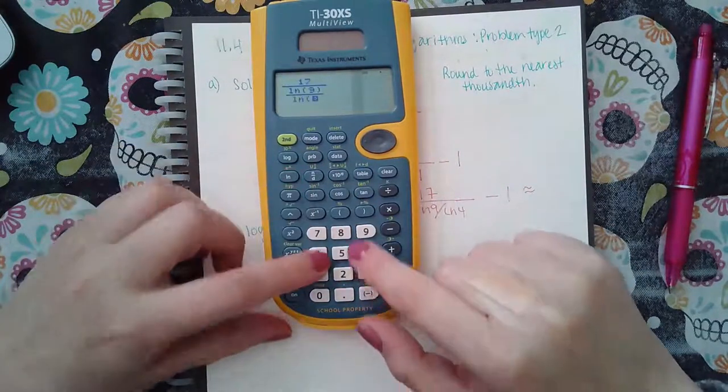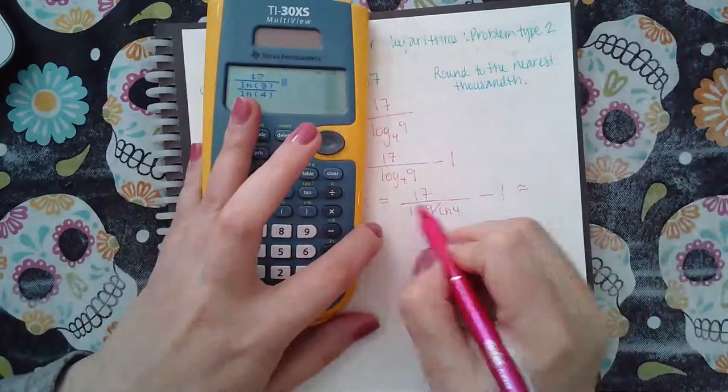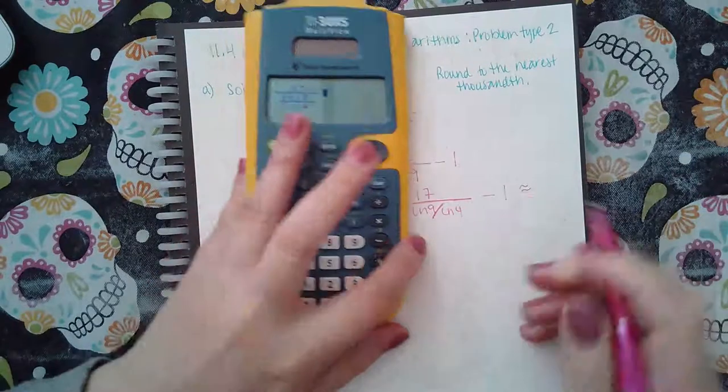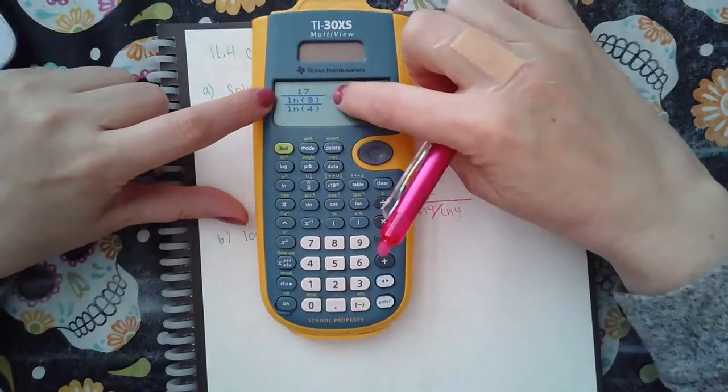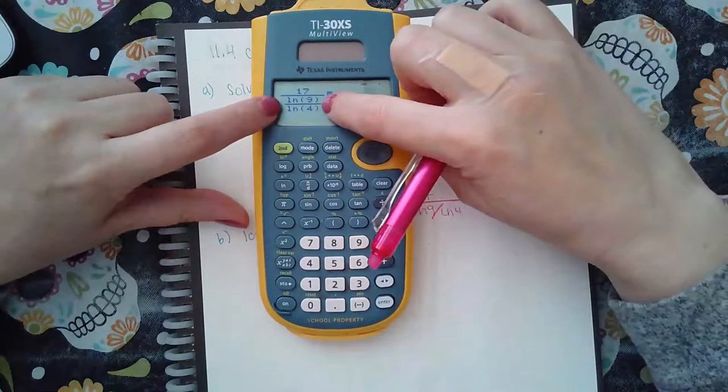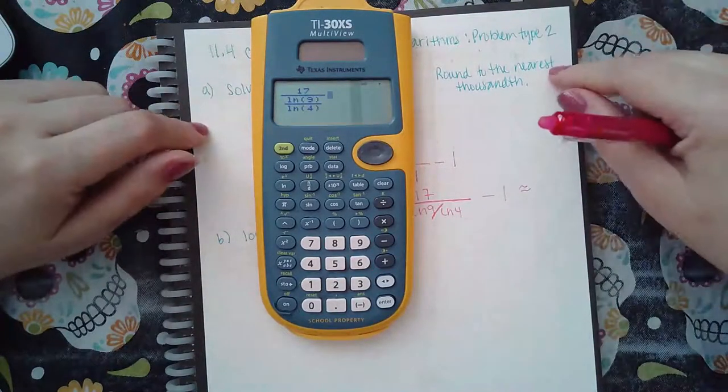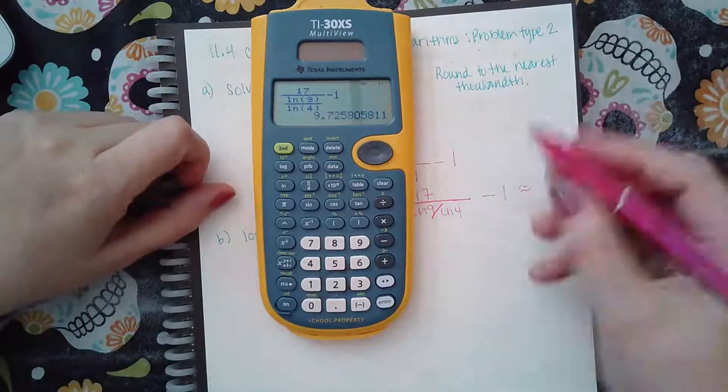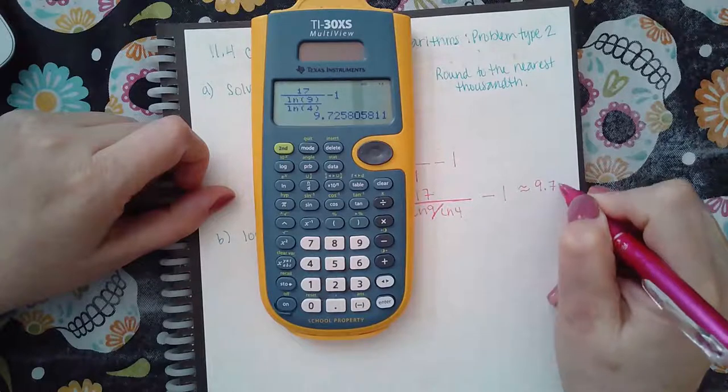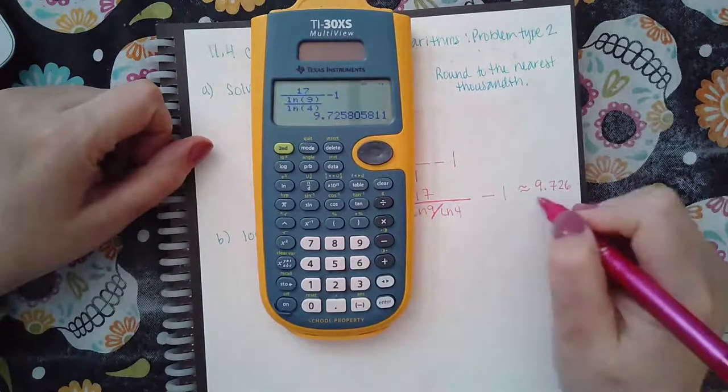So let's see: 17 over LN of 9 over LN of 4. Notice that the big fraction is this one and the little one is that one, and it's the same in my calculator. This one is wider, so that's the bigger fraction, and then this one is shorter, so that's the little fraction, so it matches exactly what's on my paper. Then I hit minus 1 off to the side, and I get that it's 9.726 if I round to the nearest thousandth. And so this is the final answer.